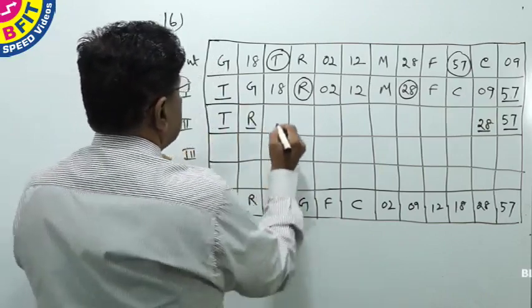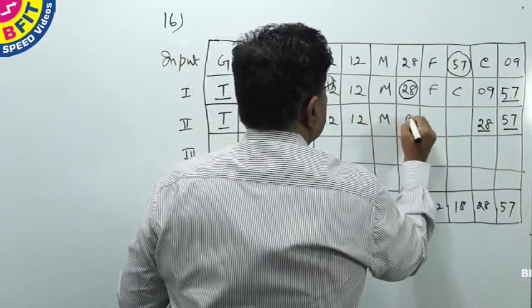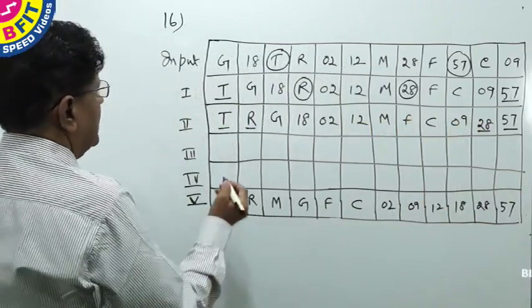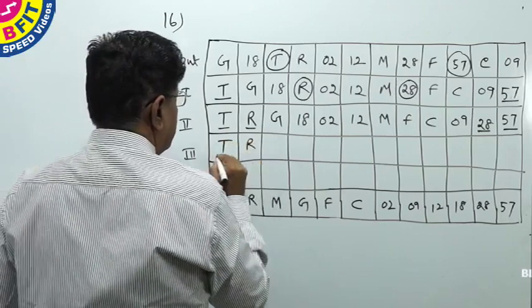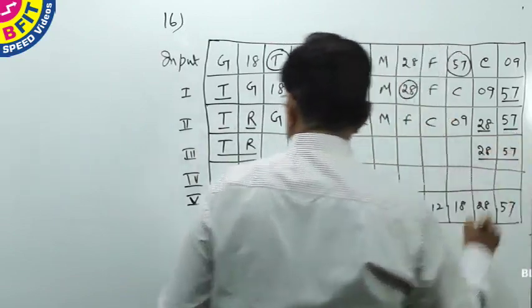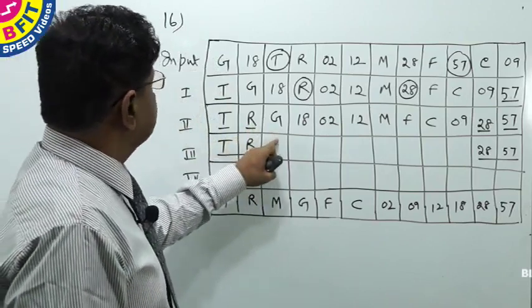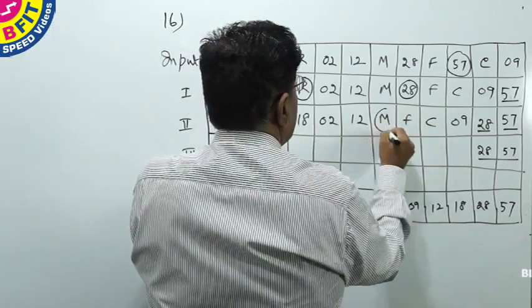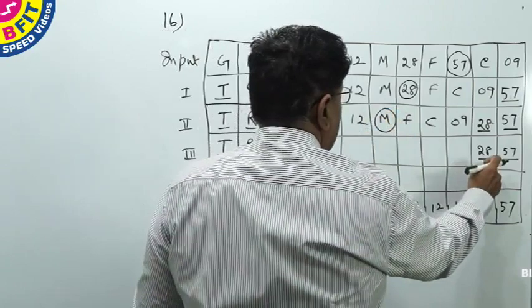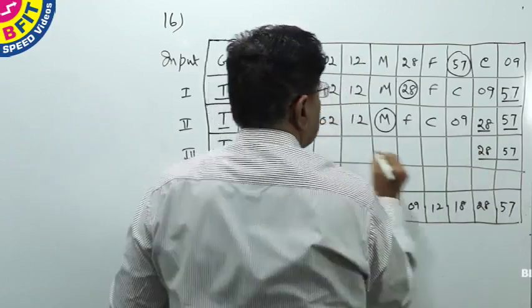Now in Step 3, we inherit T and R on the left and 28 and 57 on the right. The next alphabet lower than R is M. The next number lower than 28 is 18. So M comes next on the left and 18 goes to the right extreme. Step 3 is complete, and the remaining elements are G, 02, 12, F, C, 09.